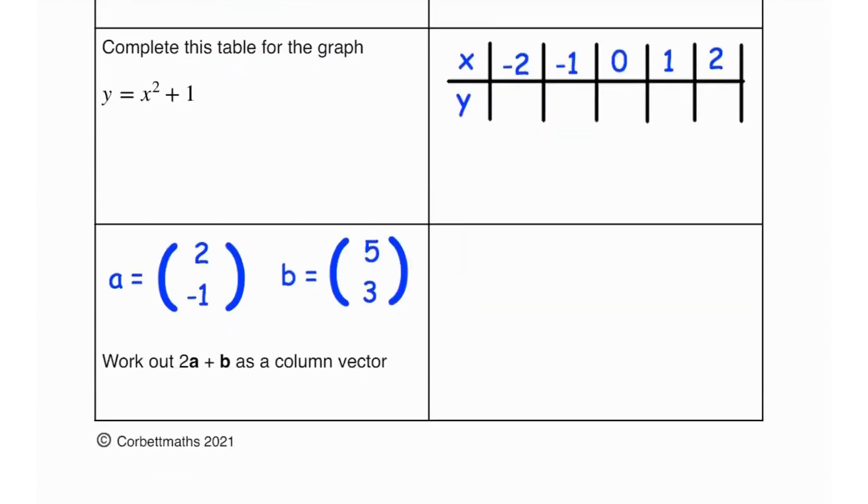Next question says complete this table for the graph. So they've given us an equation for the graph which is y equals to x squared plus 1 and they have given us values of x. So they want us to find the corresponding values of y.